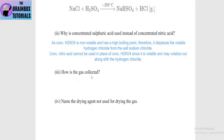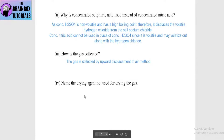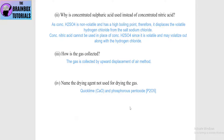How is the gas collected? The gas is collected by upward displacement of air method. Name the drying agents not used for drying HCl gas: calcium oxide (CaO), i.e. quick lime, is not used, and P2O5 (phosphorus pentoxide) is also not used. These two drying agents are not used for HCl gas.